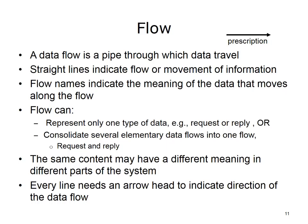Similar to ISO 5807, Gane-Sarson notation uses straight arrows. Arrows should be named with a noun to indicate the meaning of the data that moves along the flow. Data flows with a verb name are incorrect — they signify a process that has been omitted. Data flow in and out of a process must be altered in some way, i.e., not labeled the same thing. A flow can represent only one type of data (e.g., request or reply) or consolidate several elementary data flows into one (e.g., request and reply), depending on the intended detail level. Arrows indicate direction of data flow, for example, from the practice EMR to the pharmacy.